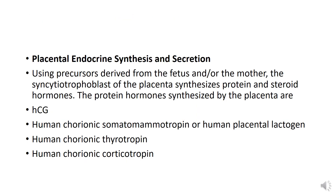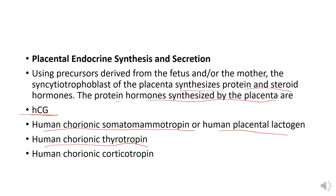For placental endocrine synthesis and secretion, the in-situ trophoblast of the placenta synthesizes protein and steroid hormones using precursors derived from the fetus or mother. The protein hormones synthesized by the placenta include human chorionic gonadotropin (hCG), human chorionic somatomammotropin (human placental lactogen), human chorionic thyrotropin, and human chorionic corticotropin.